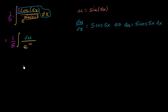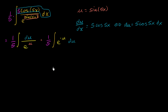So how do we take the antiderivative of this? We're still not quite ready to simply take the antiderivative. I can rewrite this as one fifth times the integral of e to the negative u du. And what might jump out at you is that maybe we do another substitution. Since we've already used the letter u, maybe we'll use w — we'll do some w-substitution.